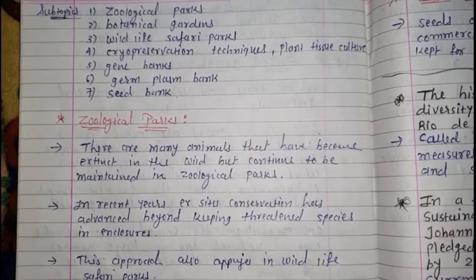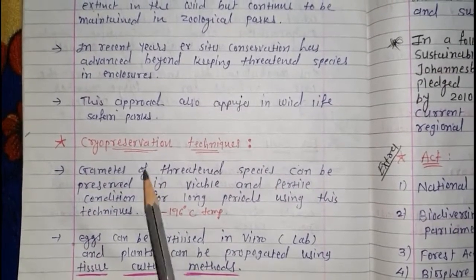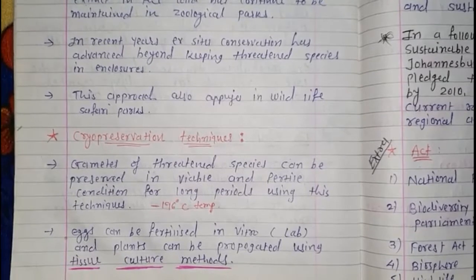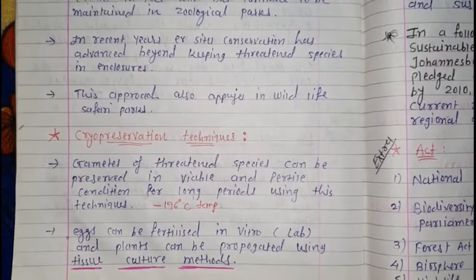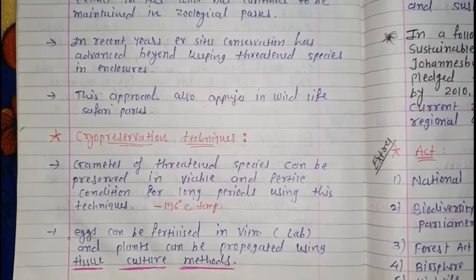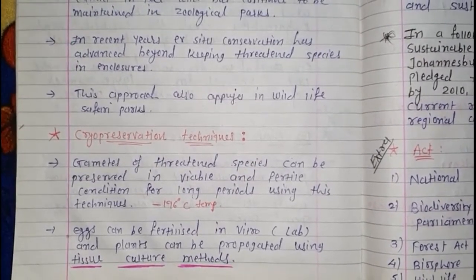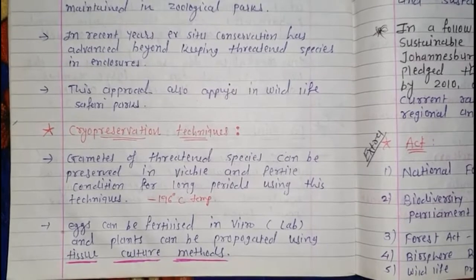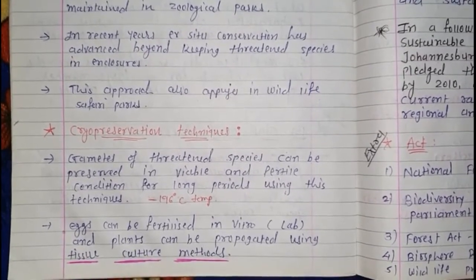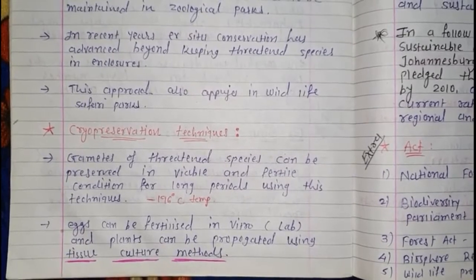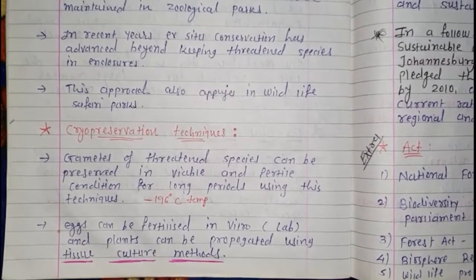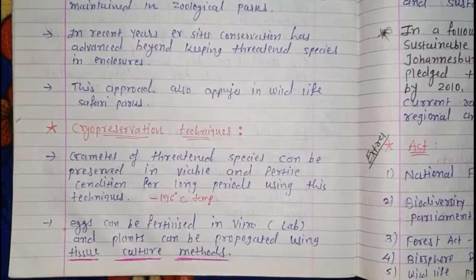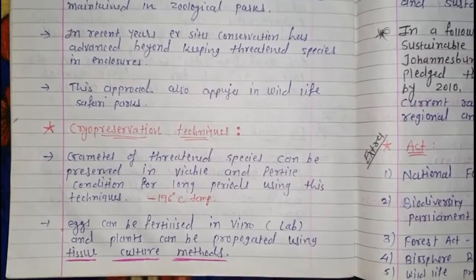Next, we talk about cryopreservation technique — this is an important technique for preservation purposes. In cryopreservation, we take gametes, whether male or female, and freeze them at around minus 196 degrees Celsius using liquid nitrogen. This is actually a tedious process; I am just explaining it in a simple way. The gametes are preserved this way.